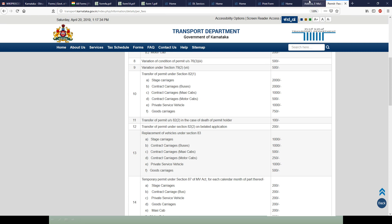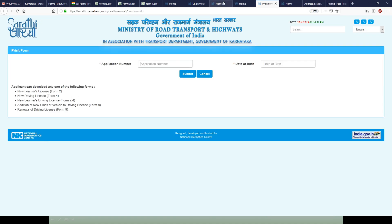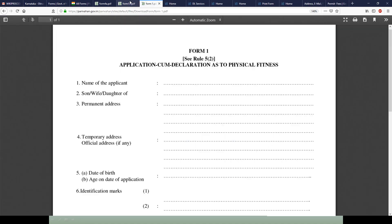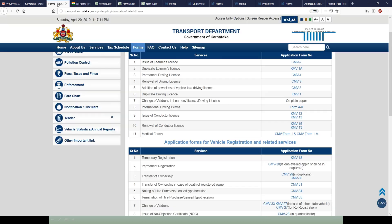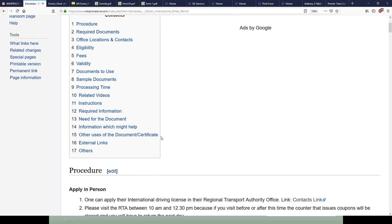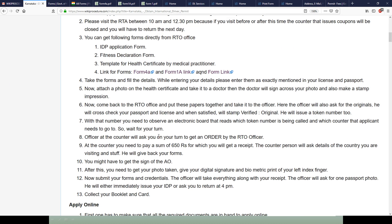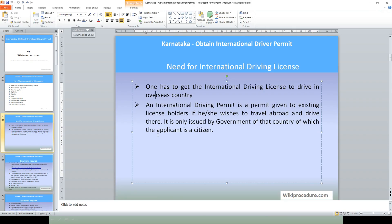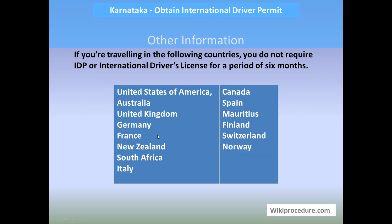All the links provided give direct access to the portals used throughout this procedure — these websites are crucial for completing the process. Other information: if you are traveling to the following countries, you do not require an IDP for a period of six months — United States of America, Australia, United Kingdom, Germany, France, New Zealand, South Africa, Italy, Canada, Spain, Mauritius, Finland, Switzerland, and Norway.